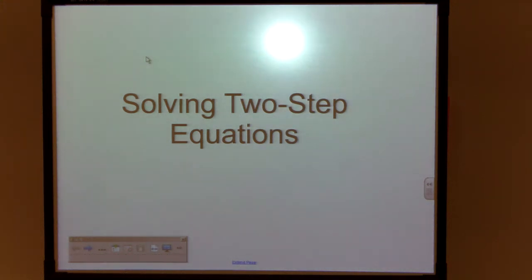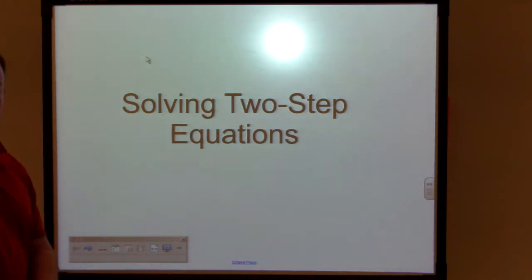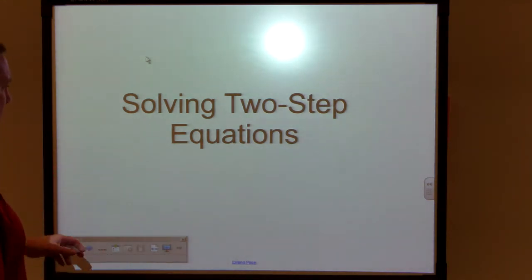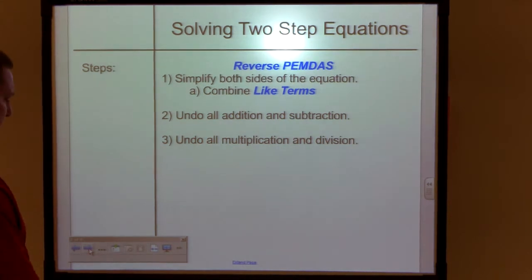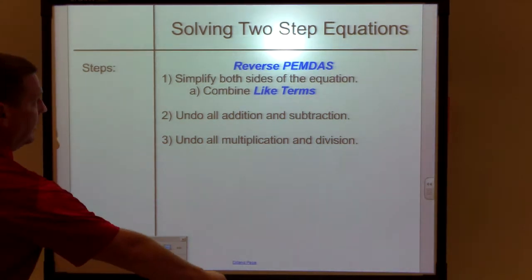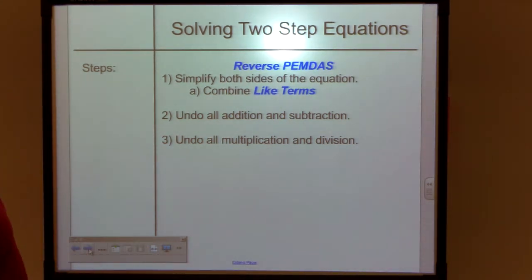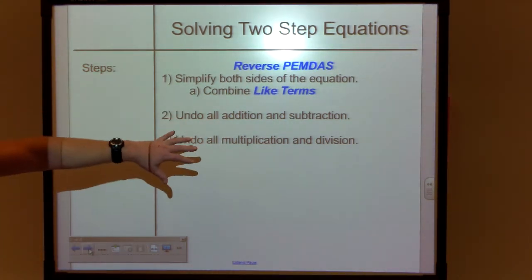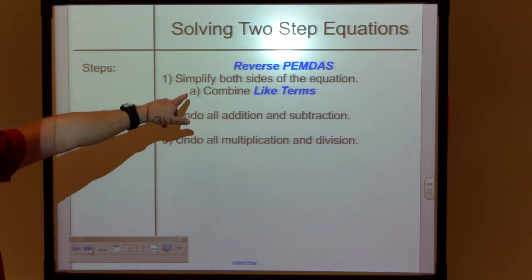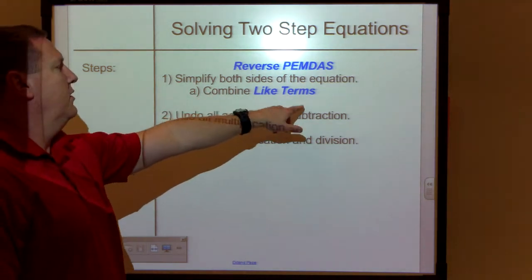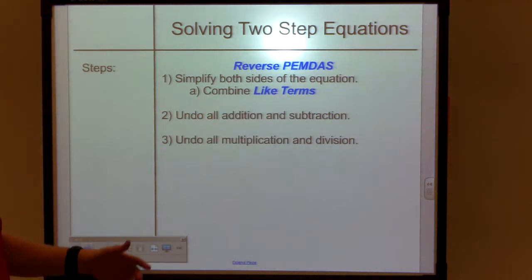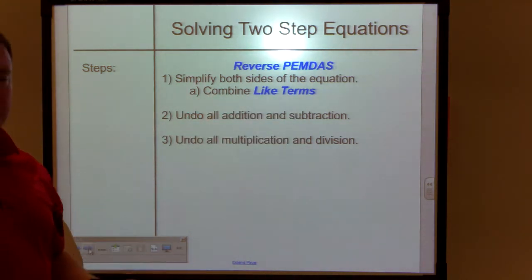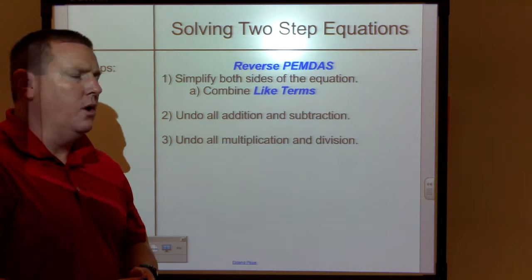There's a PDF on solving two-step equations. You can go ahead and print that out if you'd like. There's not very many notes to take on this — after all, it's only two steps. So here's the steps. It's actually three, and that's only because we include something called combining like terms, which is part of simplifying both sides of an equation.